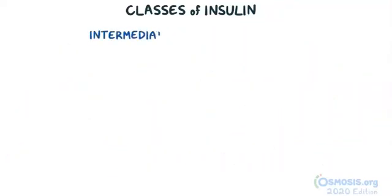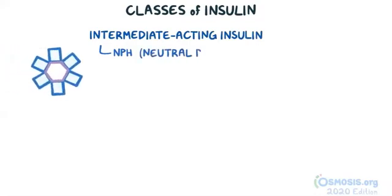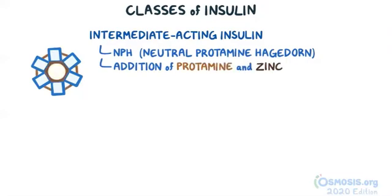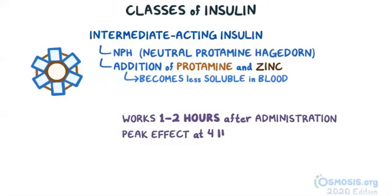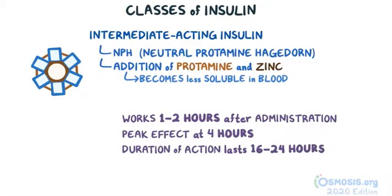Next up is the intermediate-acting insulin, known as NPH insulin, which stands for neutral protamine hagedorn. It's created through the addition of protamine and zinc to regular insulin, causing NPH insulin to become less soluble in the blood. As a result, NPH insulin only becomes active around 1-2 hours after administration, with a peak effect after 4 hours, and lasts for 16-24 hours. Due to its long duration of action, it's used as a basal insulin.